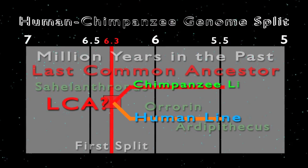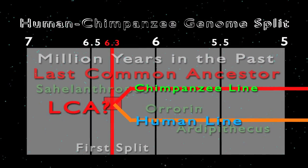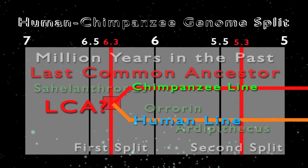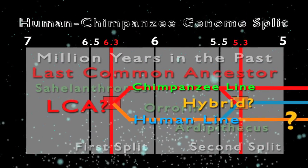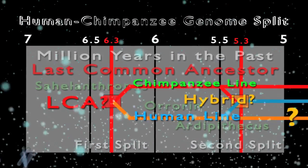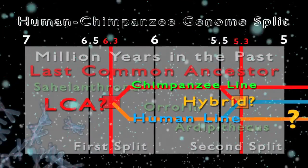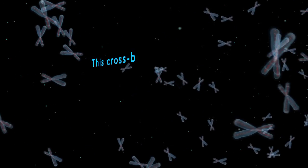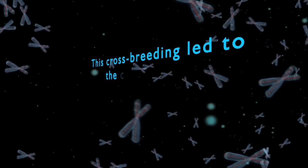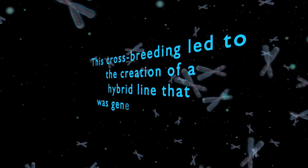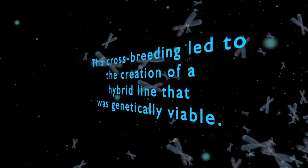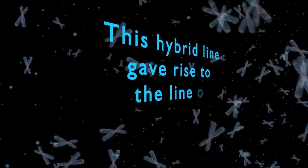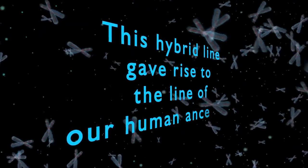This genetic research points to a second surprising conclusion. Around 5.3 million years ago, there was crossbreeding between the chimpanzee line and the line of our human ancestor. This crossbreeding led to the creation of a hybrid line that was genetically viable, and this hybrid line gave rise to the line of our human ancestor.